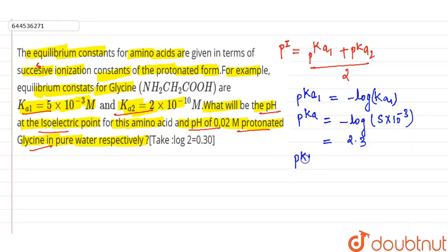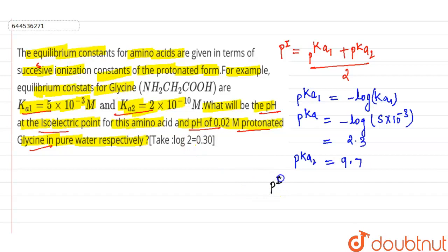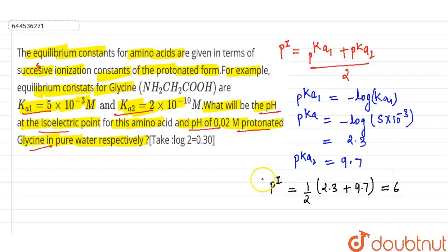Similarly, pKa2 = −log(Ka2) = 9.7. Now the pH at the isoelectric point is pI = (1/2)(2.3 + 9.7) = 6. So pI = 6 is the pH at the isoelectric point.